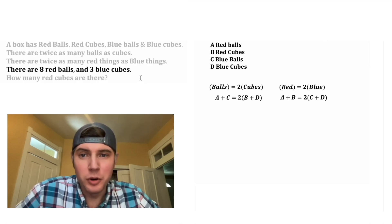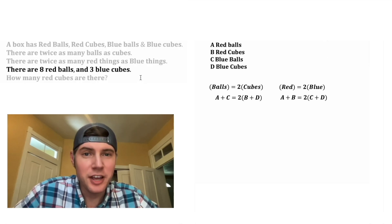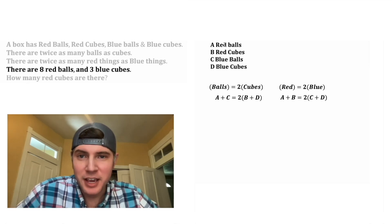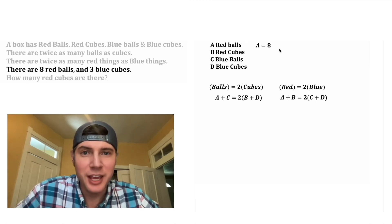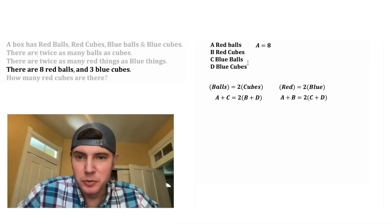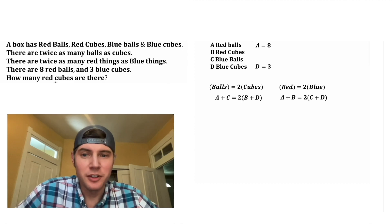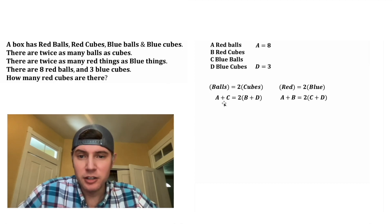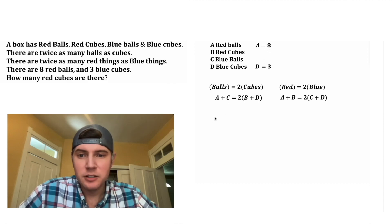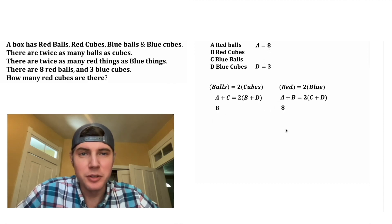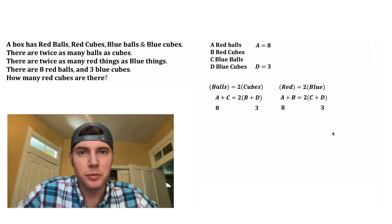Now let's focus on the fourth sentence: there are eight red balls and three blue cubes. The red balls is A, so we can just say A equals eight. And for the three blue cubes, we can just say D equals three. Since we know what A and D are, let's update these equations. A is equal to eight, so we can change both A's into eight. And D is equal to three, so both D's can become three.